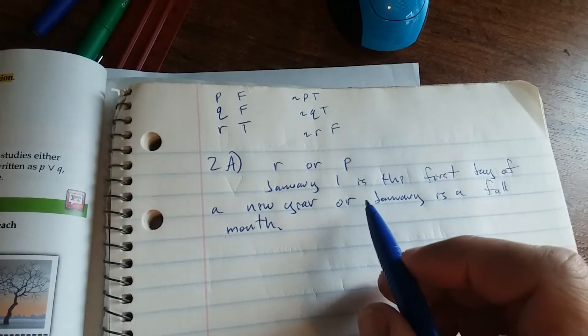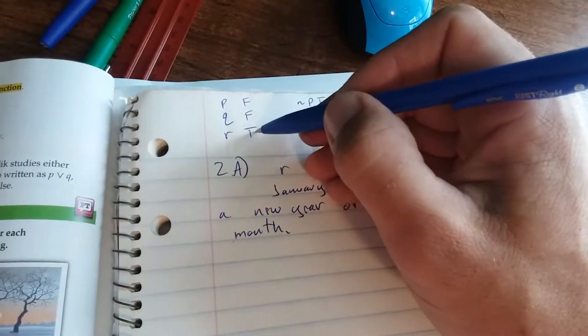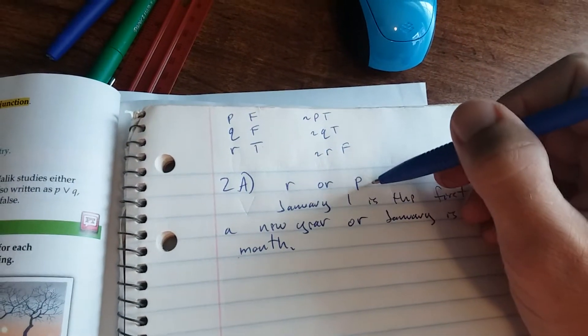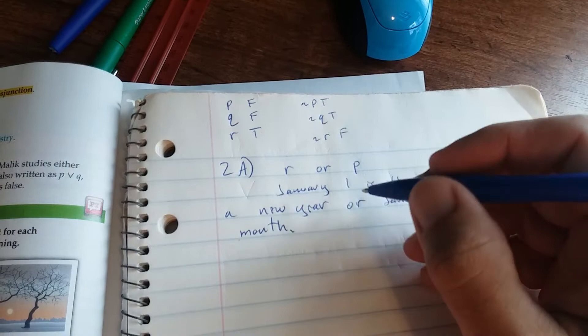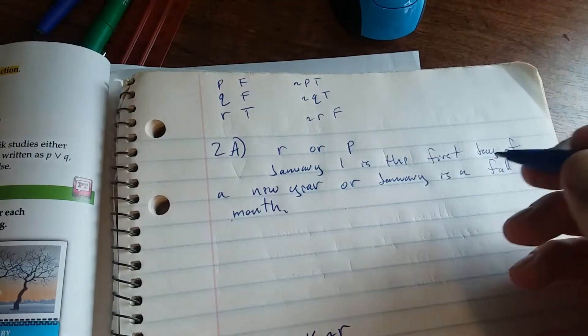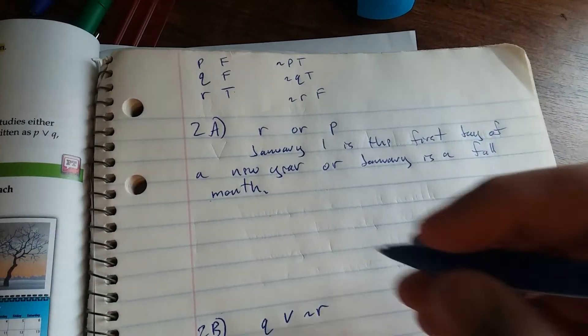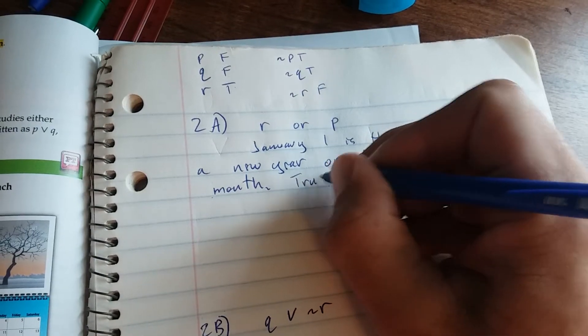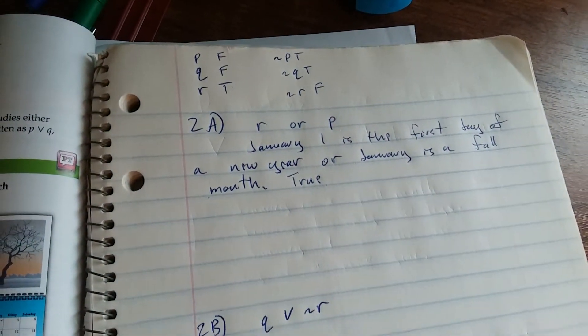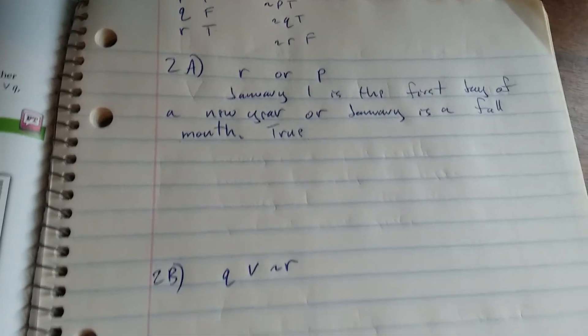So what we have here is R is true and P is false. So we have true or false. Since just one of the parts is true, this is true. In an or statement, you just need part of it to be true for the whole thing to be considered true.